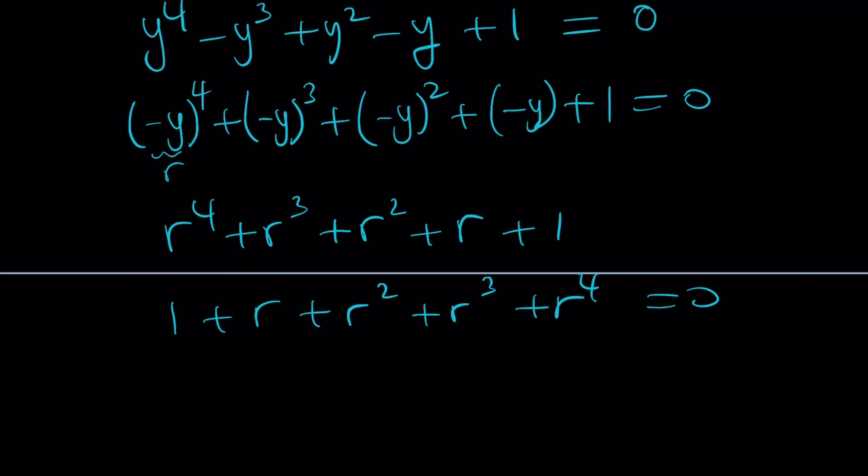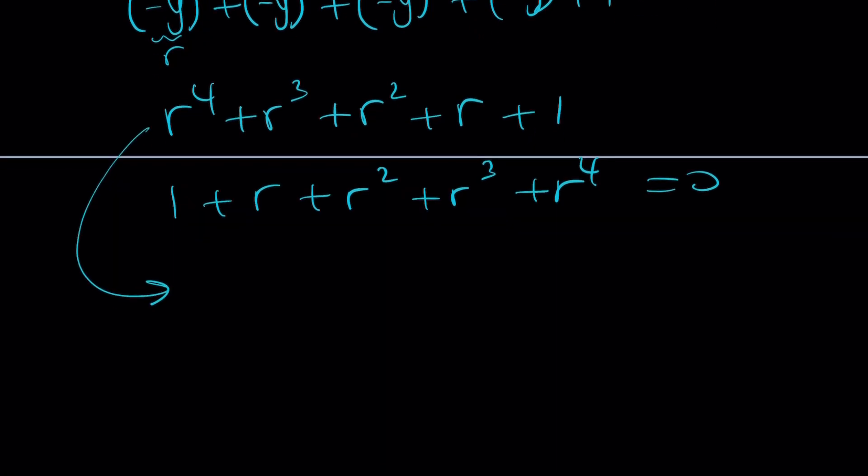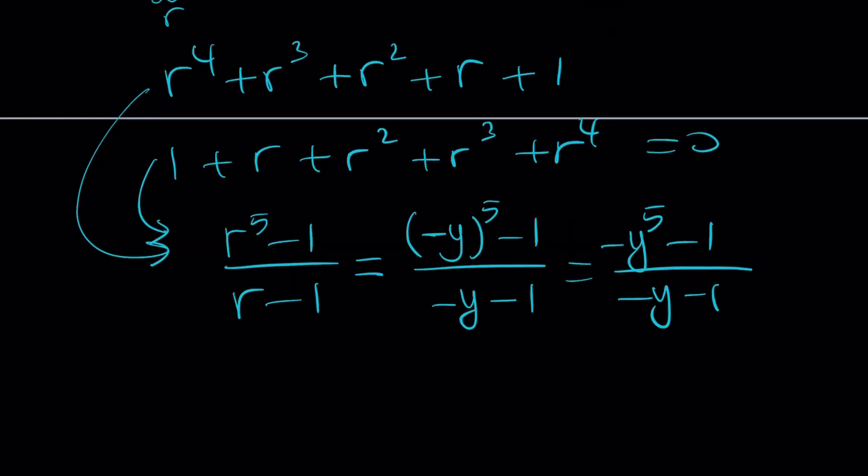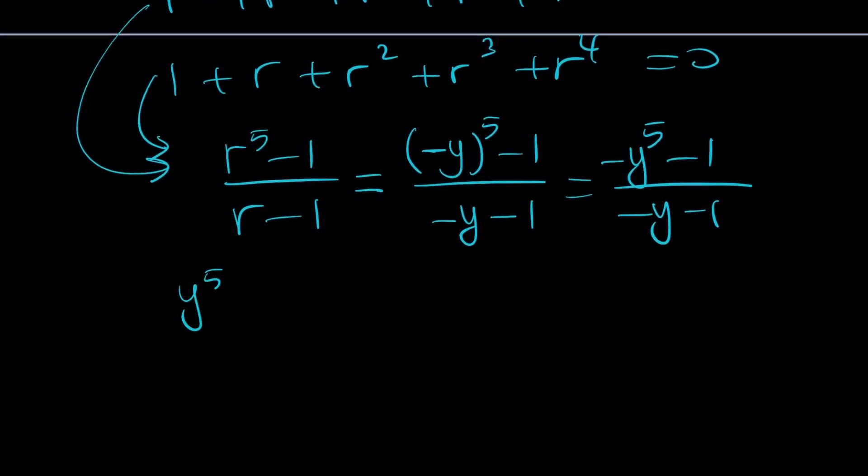As you probably know, this can be written as r to the fifth power minus 1 over r minus 1. Now let's replace r with negative y. That's going to give us negative y to the fifth power minus 1 divided by negative y minus 1. Negative y to the fifth is negative of y to the fifth. If you negate top and bottom at the same time, you get y to the fifth plus 1 divided by y plus 1 equals 0.